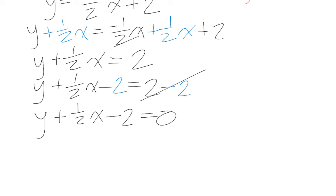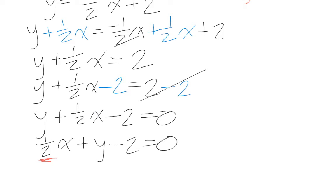Let's rearrange this slightly so the term containing x is out front. We're not finished yet, since the value of a in standard form must be a positive integer. This is positive, but it is not an integer — it is not a whole number — which means we're going to have to multiply everything on both sides of the equation by 2 to turn this value of a into a positive integer.